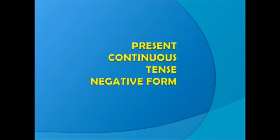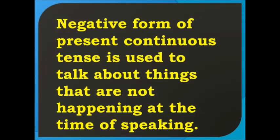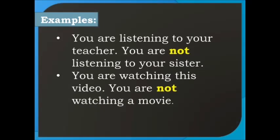Now dear students, we come to the negative form of present continuous tense. The negative form is used to talk about things that are not happening at the time of speaking. To form negative sentences in this tense, put not in between the helping verb and the main verb. For example: You are listening to your teacher.